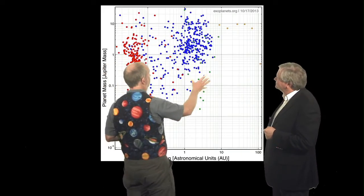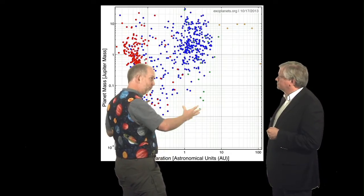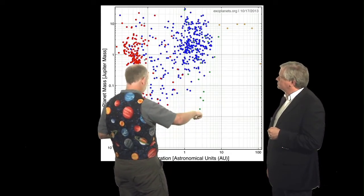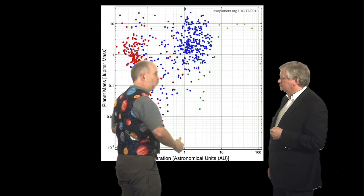They're about where you'd expect these things to be, so they're in this region over here, about the Einstein radius out, a few astronomical units out, and you can see things down to quite low masses and also quite high mass ones. So you are indeed finding things where you'd expect.